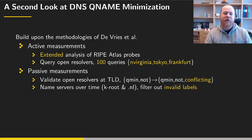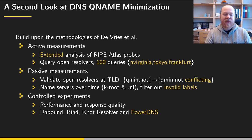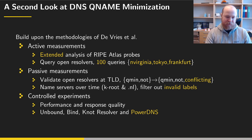We classify a query as minimized at root if it only contains one label, and as minimized at the top level domain if it has two or fewer labels. We extend the previous methodology by filtering out invalid labels — non-existing TLDs at root and response code 0 at the TLD. We also perform controlled experiments measuring performance and response quality of open source resolvers. The previous study compared Unbound, BIND, and Knot Resolver; we additionally include PowerDNS, which did not have qmin implemented at the time of the previous study.